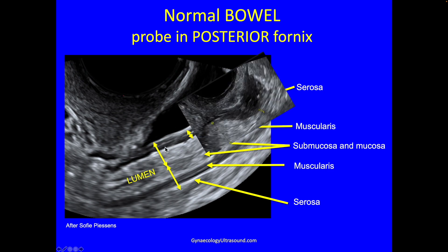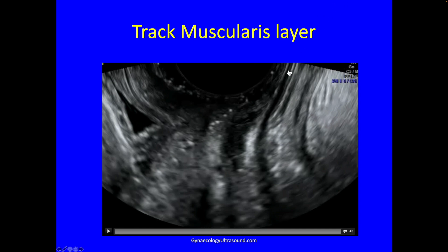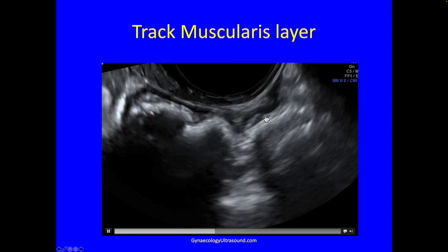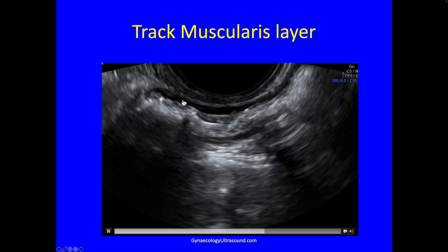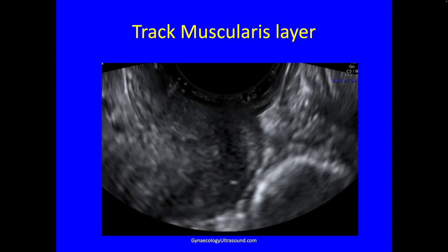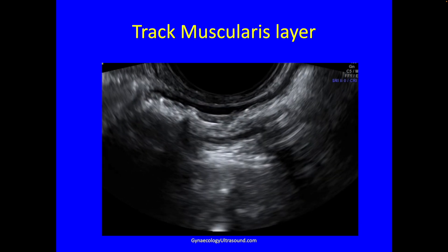The muscularis layer is easily seen because it's a triple layer, and when it's involved with endometriosis it becomes a very dark hypoechoic shape outlined by white tissue — a thick muscularis layer. You withdraw the probe a little bit below the cervix, look for that layer — there's serosa, there's the muscularis — then keep your eye on that layer as you very gently introduce the probe. You can see I'm following it, tracking it through the second rectal curve, and you can often track muscularis up to the uterine fundus but not always.